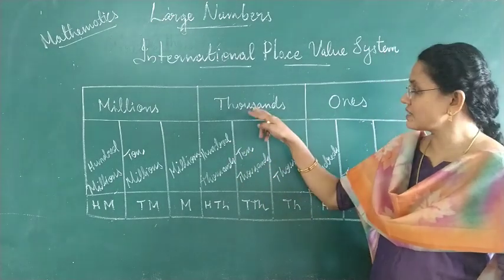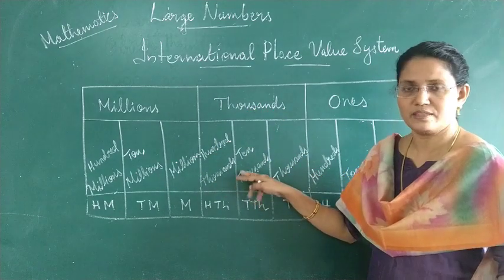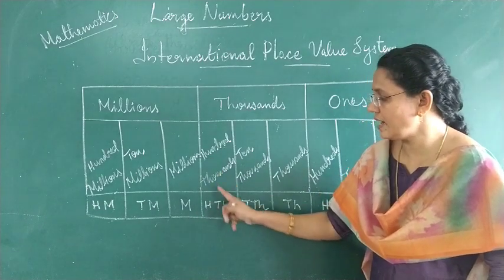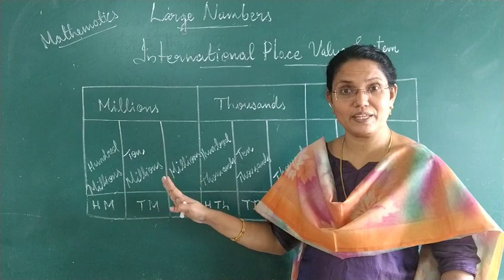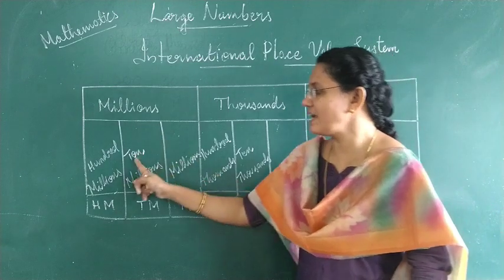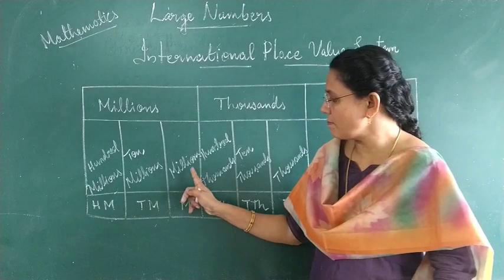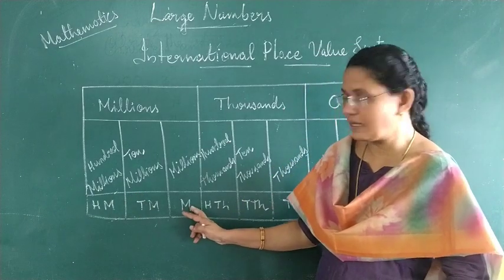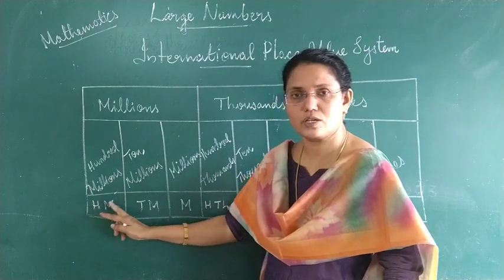In the thousands period in the international system, one more place is there: 100,000s, denoted as HTh (H for hundreds, Th for thousands). The next period is the millions period, which also has 3 places: millions, 10 millions, and 100 millions. Millions is denoted by M, 10 millions by TM, and 100 millions by HM.